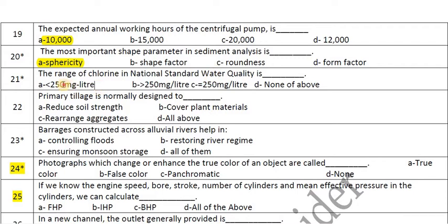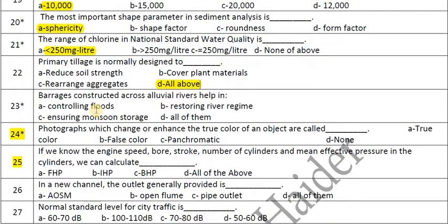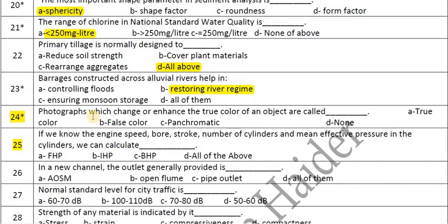The range of chlorine in national standard water quality is less than 250 mg per liter. The tillage parameter is designed to reduce soil strength, cover plant material, and rearrange aggregates. Barrages constructed across alluvial rivers help maintain a stable river regime.